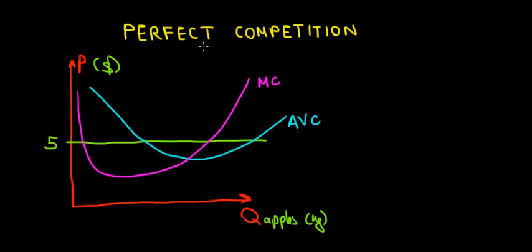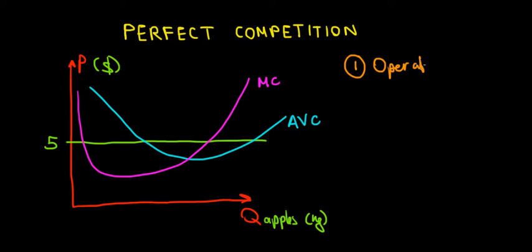Let's start working on the concept of perfect competition. In this video we're going to discuss when it's worth for a company to stay in the market — when is it worth to operate. That's our goal for this video, and we'll do it on this graph with this example. Suppose we have apples in the market that we sell.